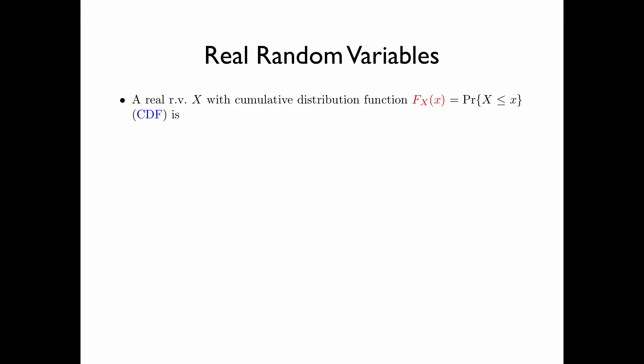We first discuss some very basic properties of real random variables. A real random variable x can be discrete, continuous, or mixed. This is characterized by the cumulative distribution function, or CDF, F_x(x) — or simply F(x) when there is no ambiguity — which is defined as the probability that the random variable x is less than or equal to x.